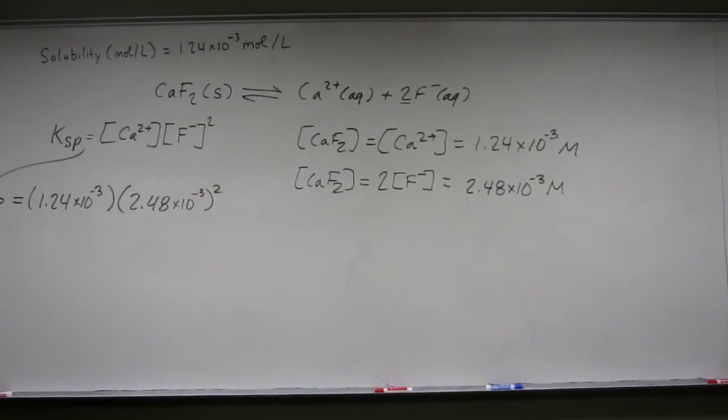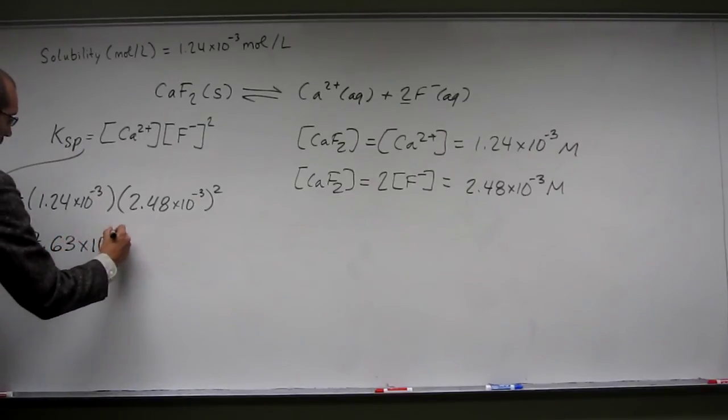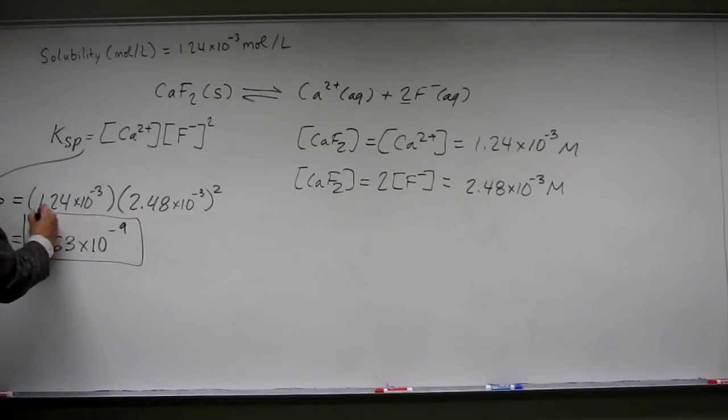You should be expecting this to be a small number since calcium fluoride is not soluble. And I get, to three significant figures, 7.63 times 10 to the negative ninth for the Ksp of calcium fluoride at 35 degrees Celsius.